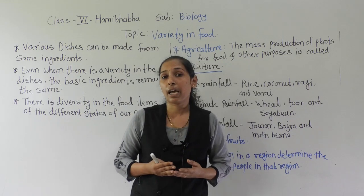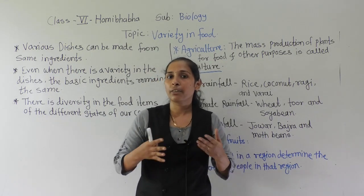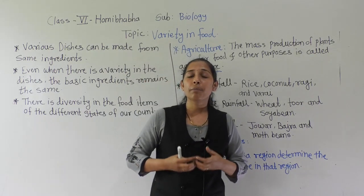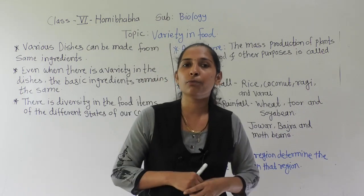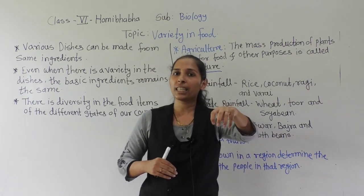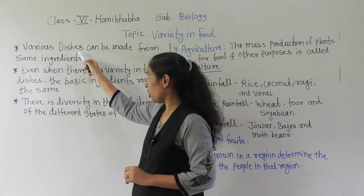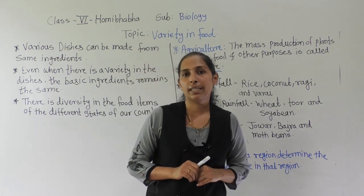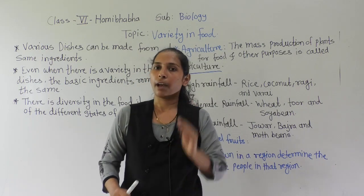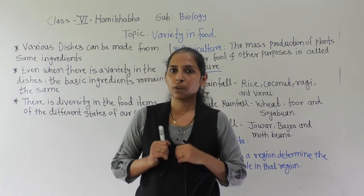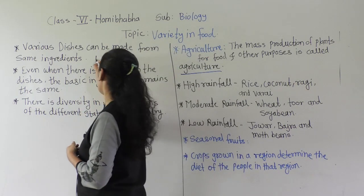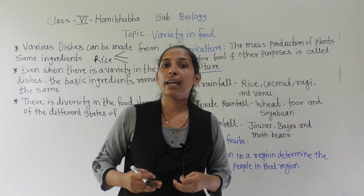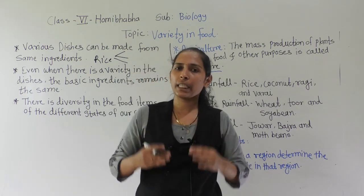Let's discuss those food materials we have every day. If we talk about rice, rice is the basic food item in our meal — we have rice every day. With the help of rice we can make different food stuffs. Rice is the basic ingredient, and various dishes can be made from the same ingredient. Taking rice as an example: from rice we can make idli, dosa, modak, and bhakri.